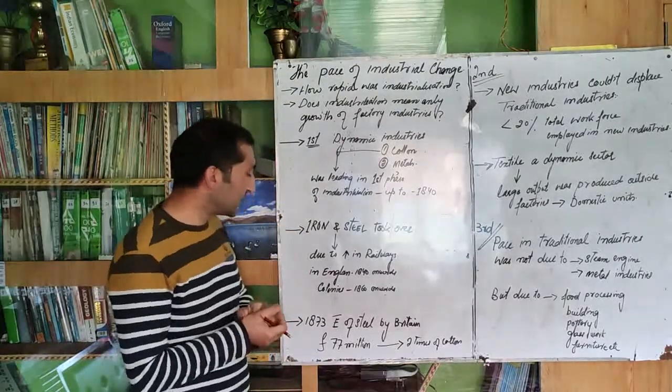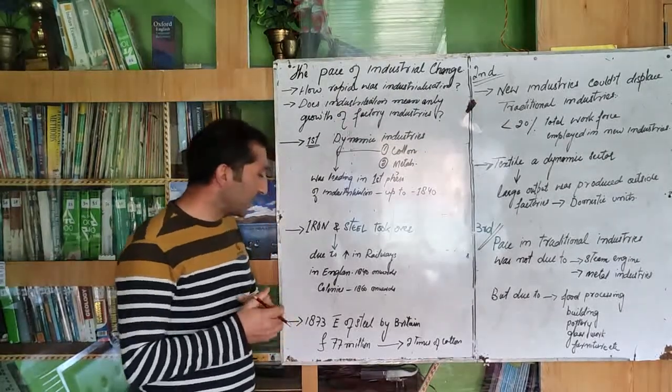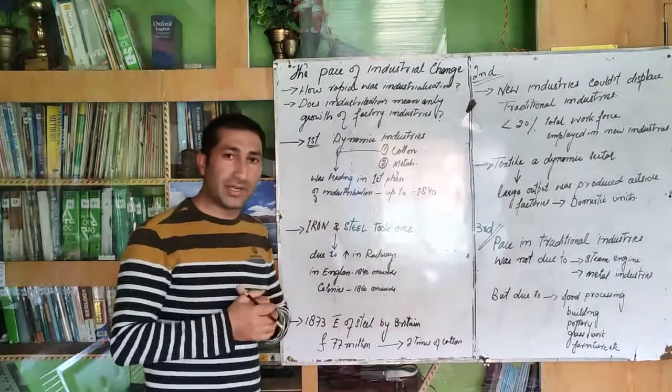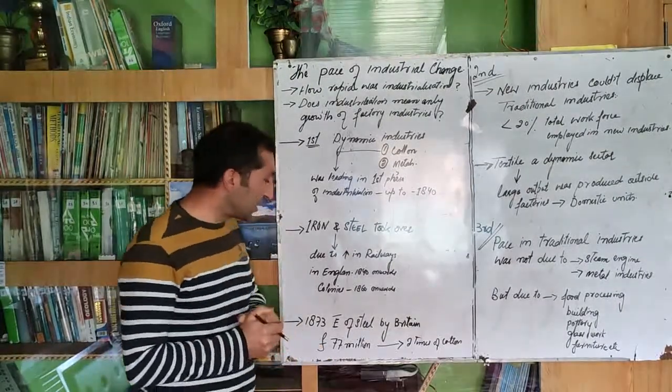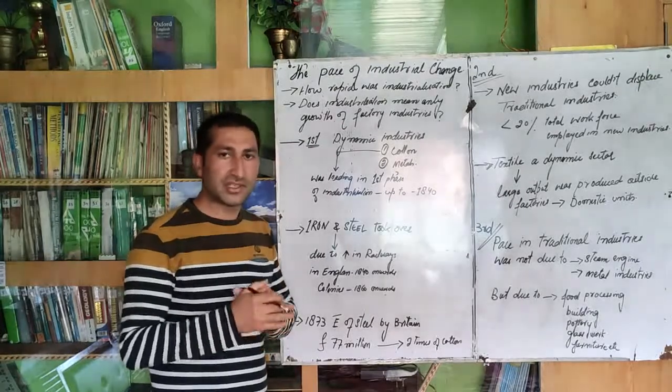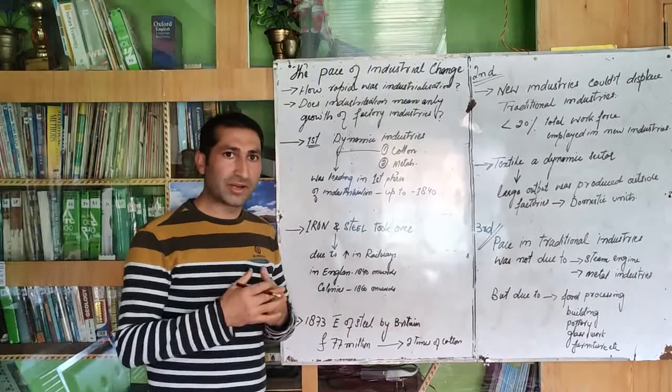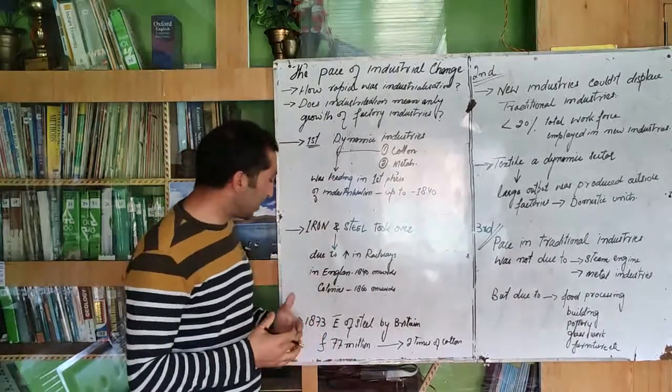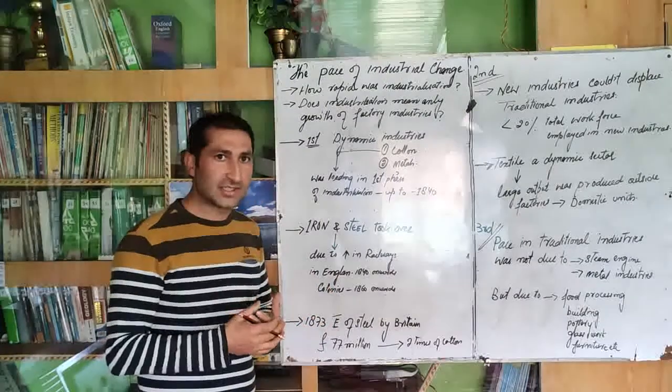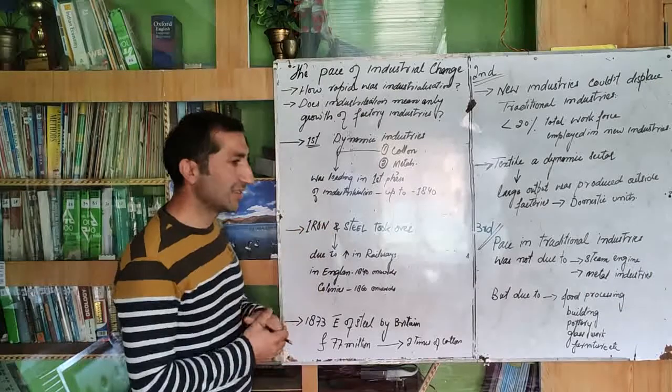We see that in 1873, Britain exported 77 million pounds worth of steel to its colonies for the purpose of railway construction. So with the passage of time, the metal industry grew and took over as the leading industry.